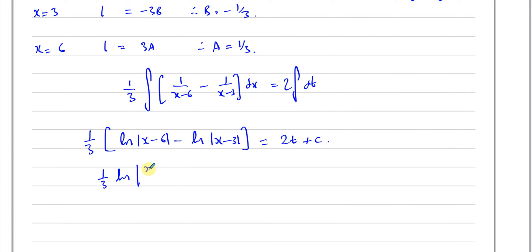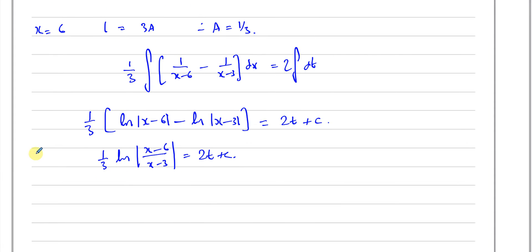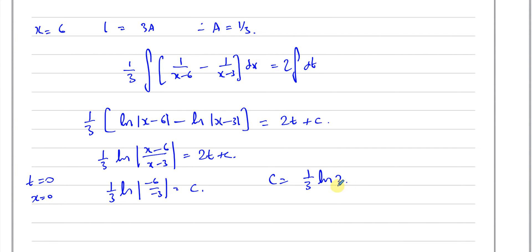Using the laws of logarithms — specifically the division law — we combine the two ln terms: one third times ln|( x minus 6) over (x minus 3)| equals 2t plus C. To find C, we apply the initial condition: when t equals 0, x equals 0. Substituting gives one third times ln|minus 6 over minus 3| equals C, which is one third times ln 2. So C equals one third ln 2.